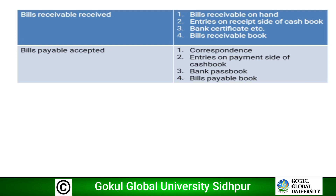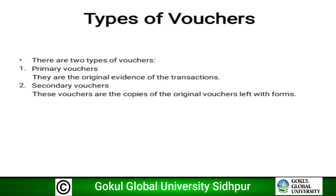Bills receivable transactions include bills receivable on hand, entries on the receipt side of cash book, bank certificates, and bills receivable book. Bills payable include correspondence, entries on the payment side of cash book, bank passbook, and bills payable book.